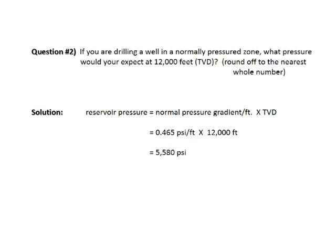Be sure and round off to the nearest whole number. The solution: reservoir pressure equals normal pressure gradient per foot times true vertical depth. Therefore, reservoir pressure would equal 0.465 psi per foot times 12,000 feet, and the answer would be 5,580 pounds per square inch.